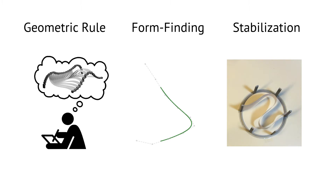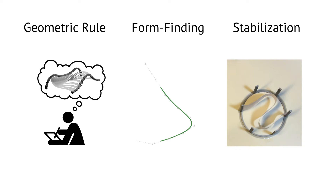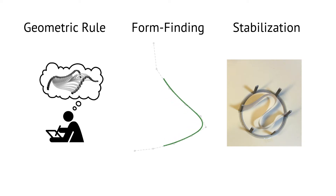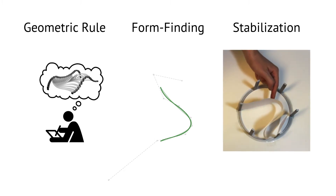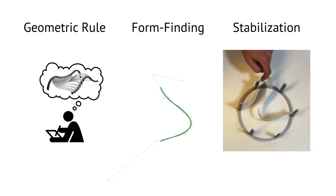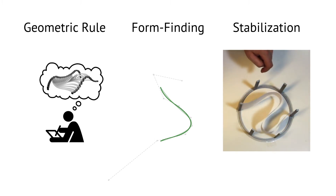These contributions serve two functions. First, the geometric rule serves as a guide to designers to only draft structures that are physically viable. Second, the computations give rise to form-finding algorithms that improve on existing designs in a matter of seconds. This includes an algorithm for the stabilization of elastic curves that would otherwise buckle.